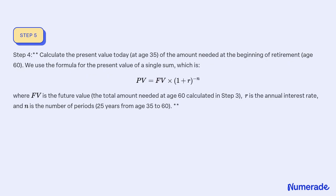Step 4: Calculate the present value today (at age 35) of the amount needed at the beginning of retirement (age 60). We use the formula for the present value of a single sum: PV = FV × (1 + R)^−N, where FV is the total amount needed at age 60 (calculated in Step 3), R is the annual interest rate, and N is the number of periods — 25 years from age 35 to 60.